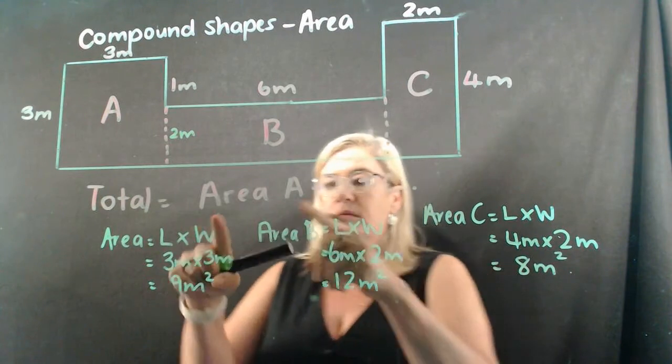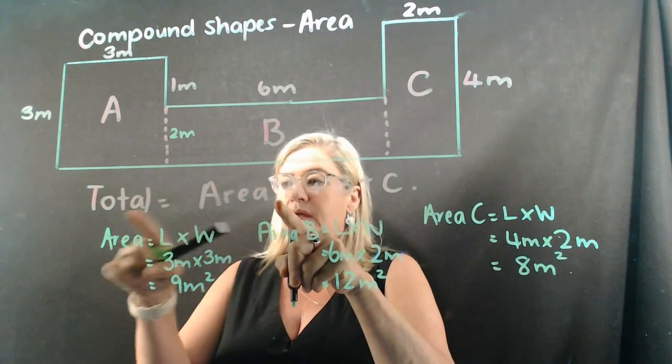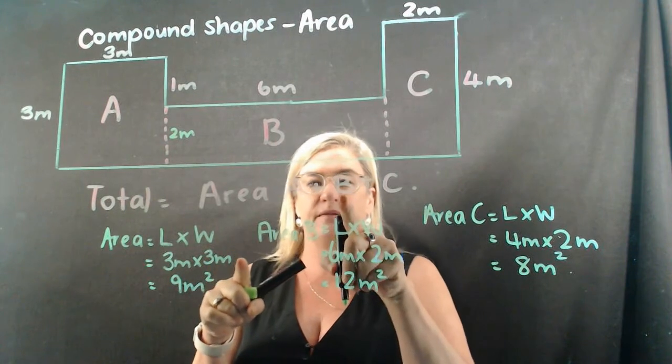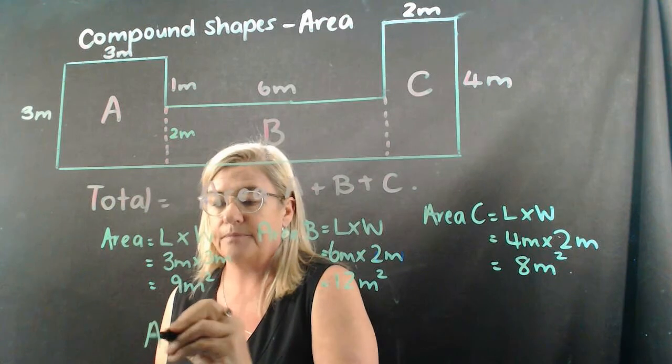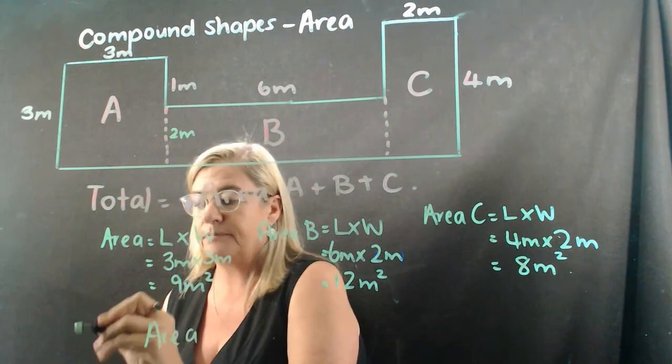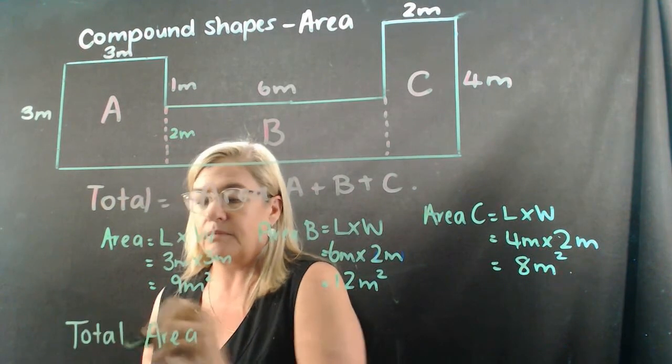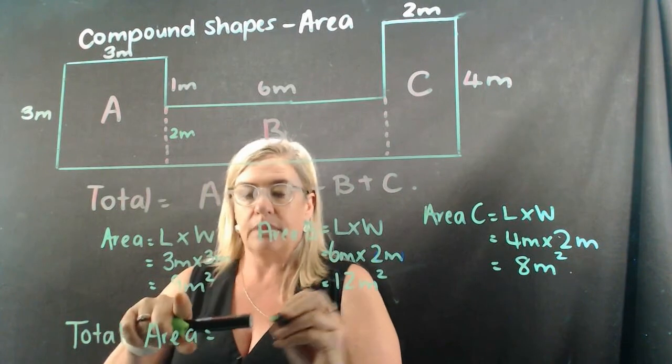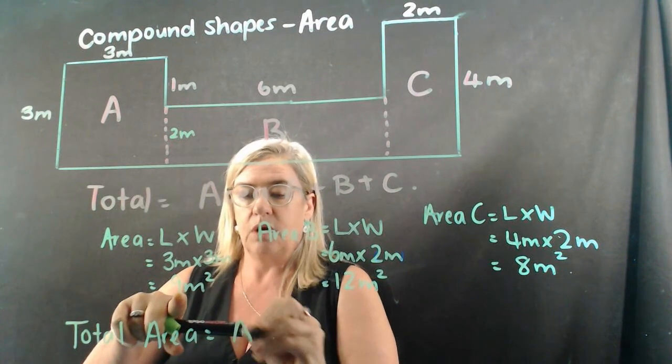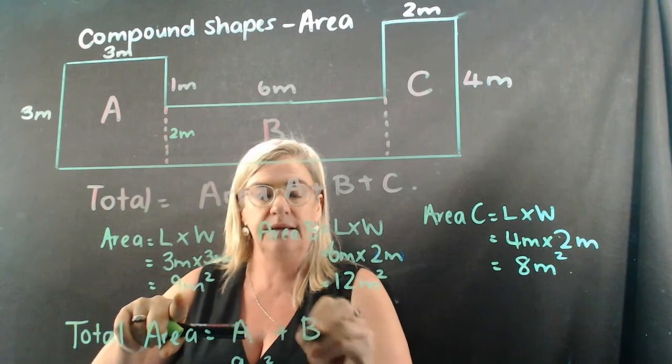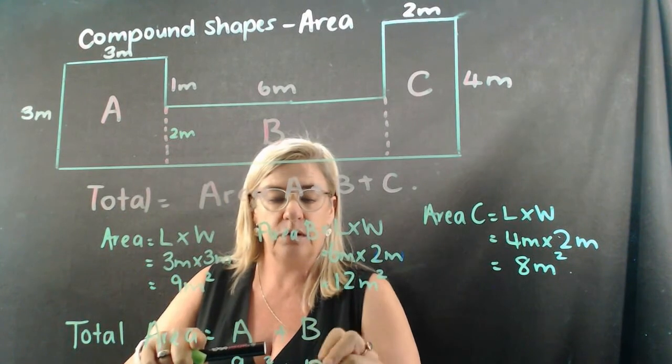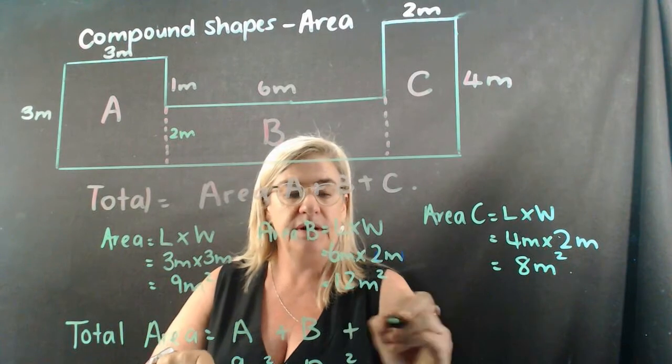So like we said earlier, the total area is area A plus B plus C. So we're going to say total area is going to be A, nine meters squared, plus B, twelve meters squared, plus C, which is eight meters squared.